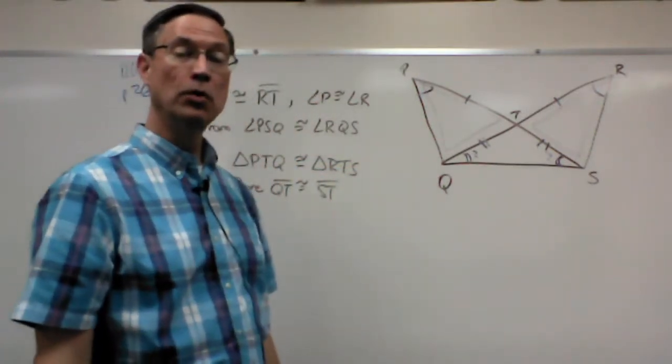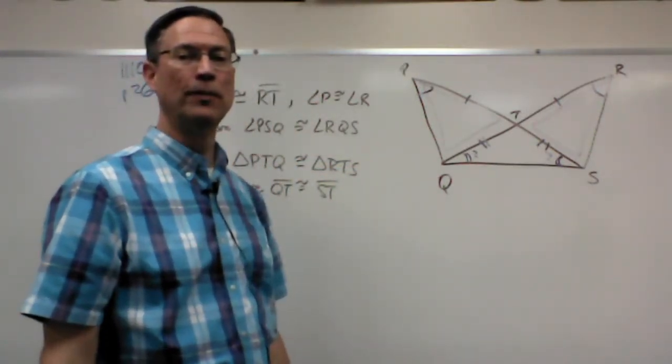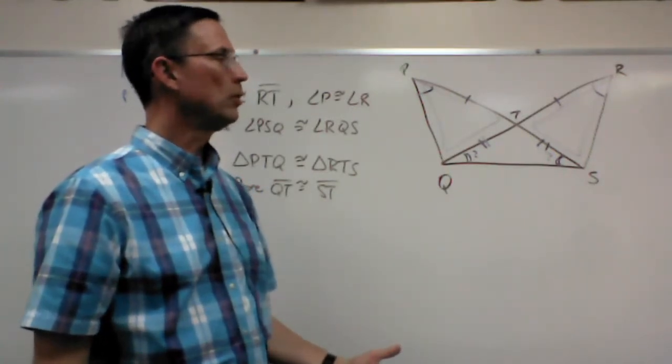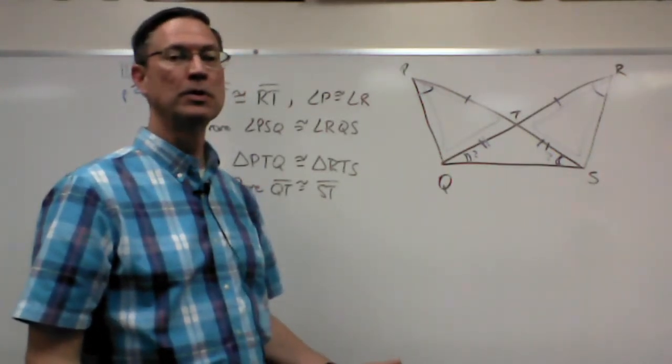If those two sides are congruent, what is that the definition of? If two sides of a triangle are congruent, that's the definition of a certain type of triangle.